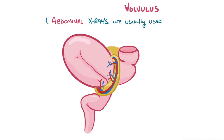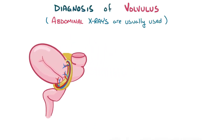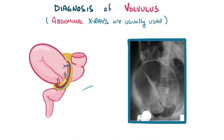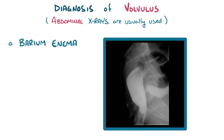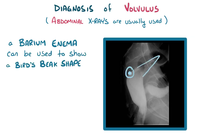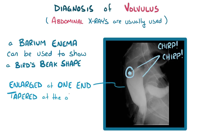Abdominal x-rays are usually used to diagnose volvulus. These x-rays show the shape of the volvulus, which can look like a bent inner tube or a coffee bean. A barium enema can also be used to show a bird's beak shape — enlarged at one end and tapered at the other end — which is the point where the bowel is twisted.